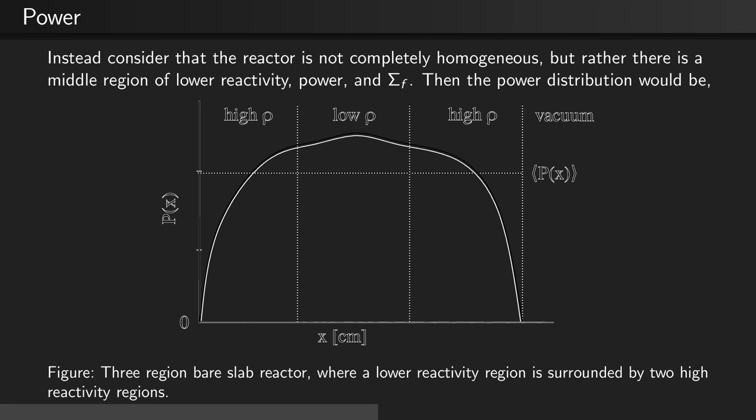If we instead modify this reactor so that there's a low region of reactivity in the middle with relatively high regions of reactivity on the ends, we'll see that we obtain a flatter flux and power profile because the low reactivity region is not able to achieve the same power heights. So a non-homogeneous system that is designed in this way can achieve a flatter flux and power profile.